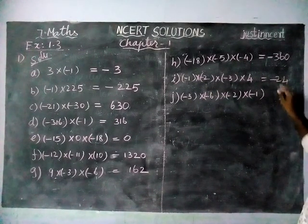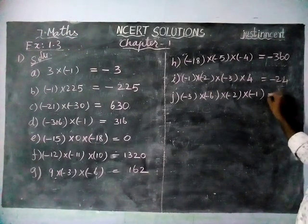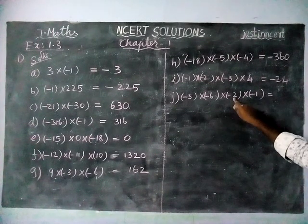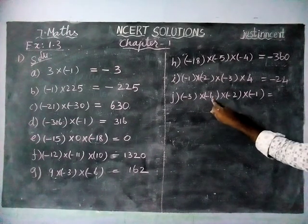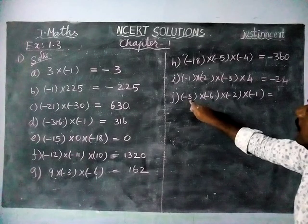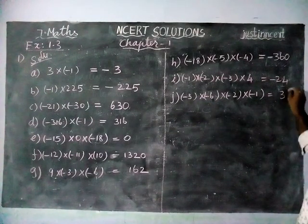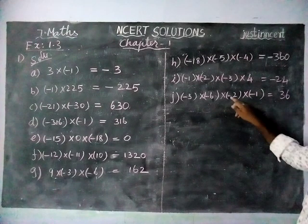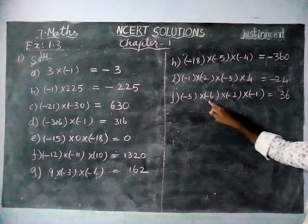Next, last step, option j: 1 into 2 is 2, 2 times 6 is 12, 12 threes are 36. So we have to check the symbols: minus into minus is plus, and here minus into minus is plus. So both are also plus sign.